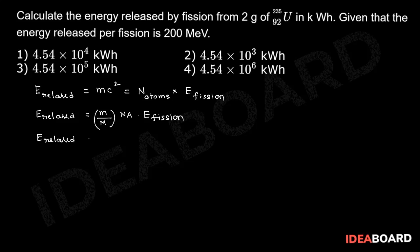Thereby energy released is equal to 2 by molecular weight of uranium-235. Mass is 2 grams into NA, 6.023 into 10 power 23, into energy released in the fission, 200 million electron volts.